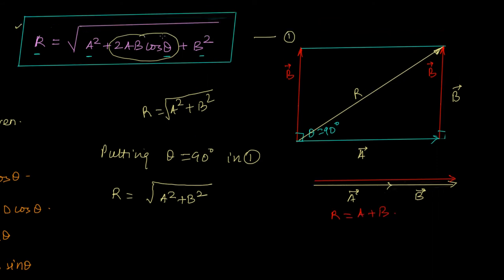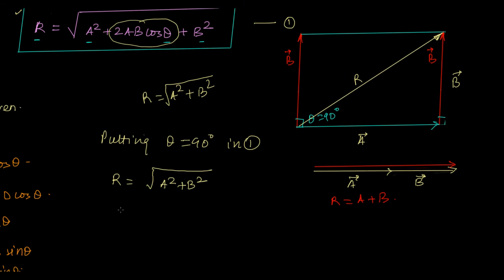Now does it mean that if I put theta equal to 0 here, I will get A plus B? Let us check. So I will get R is equal to, if I put theta equal to 0 degree in equation 1, it gives me R is equal to A square plus 2AB plus B square, which is nothing but A plus B whole square, which is right.